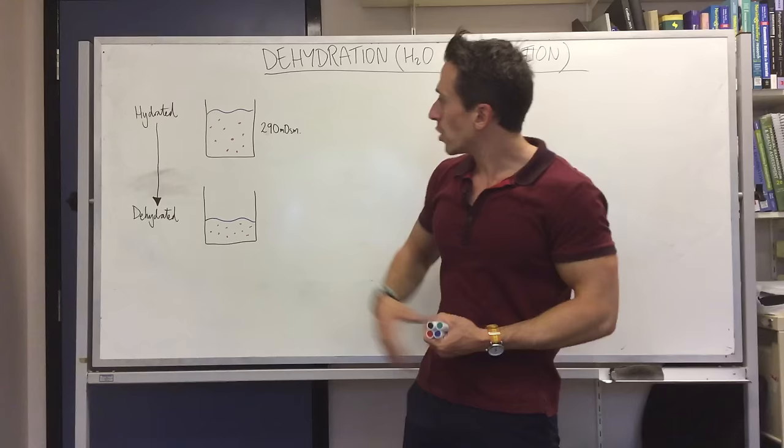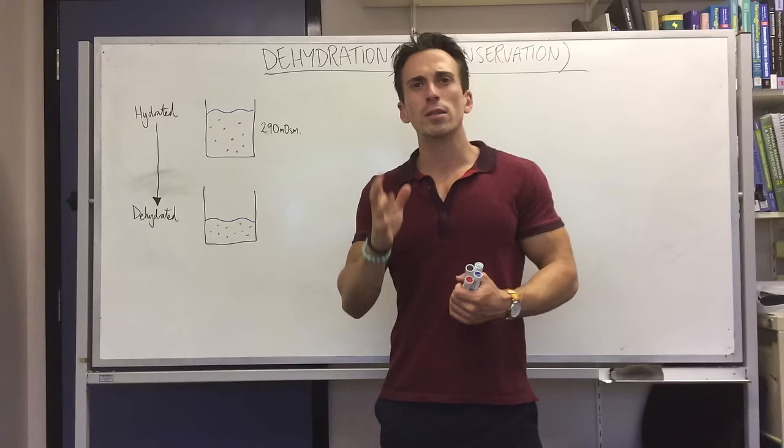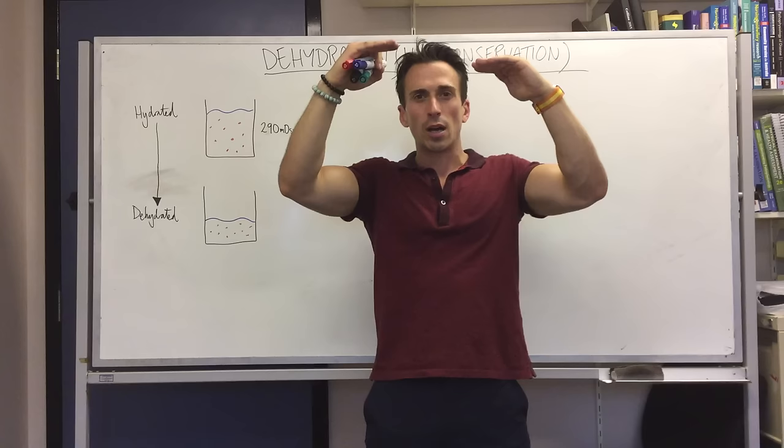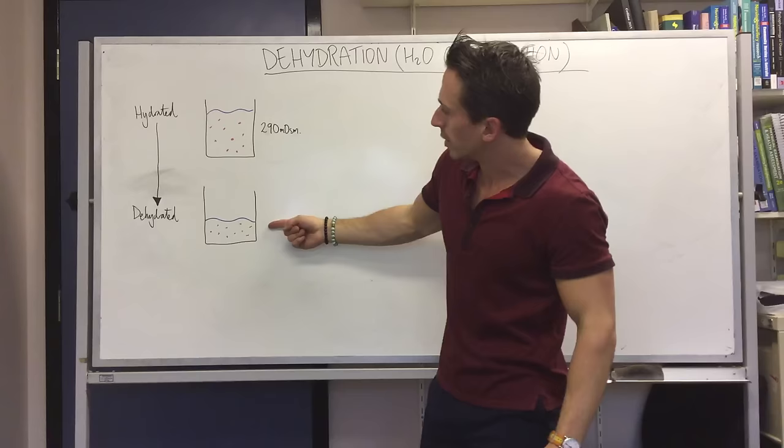Now the solutes in your body may be diminished slightly but not as much as the water in your body is, which means that you have a particular concentration of solutes and water. But when you start to do vigorous exercise and don't remain well hydrated, the water drops far below that of the solutes, and this is what I'm highlighting here.